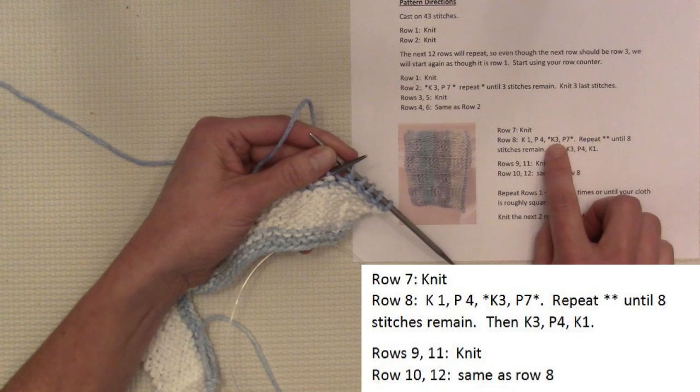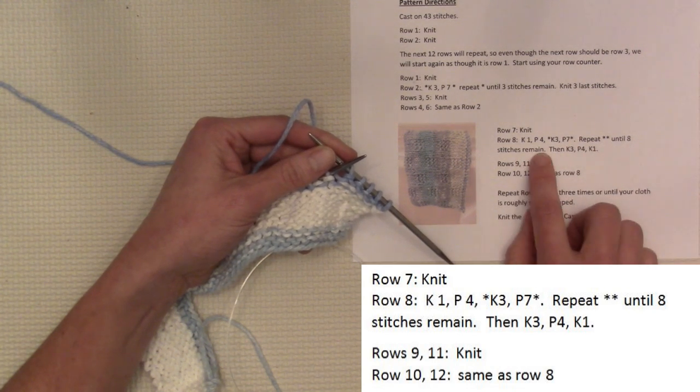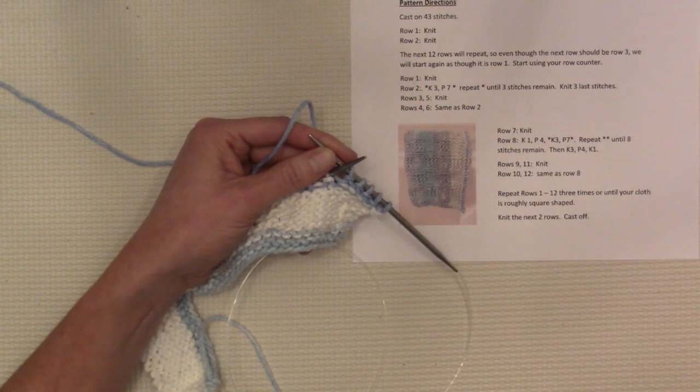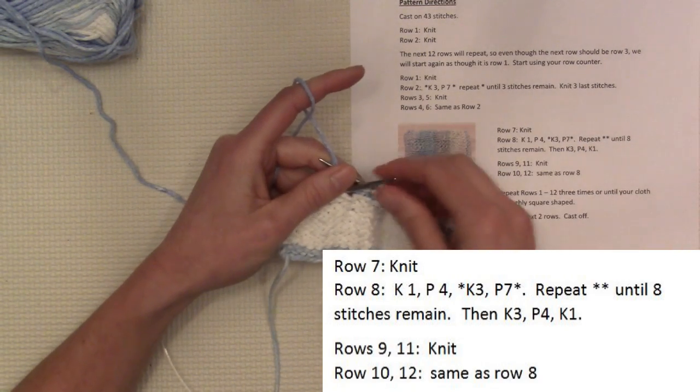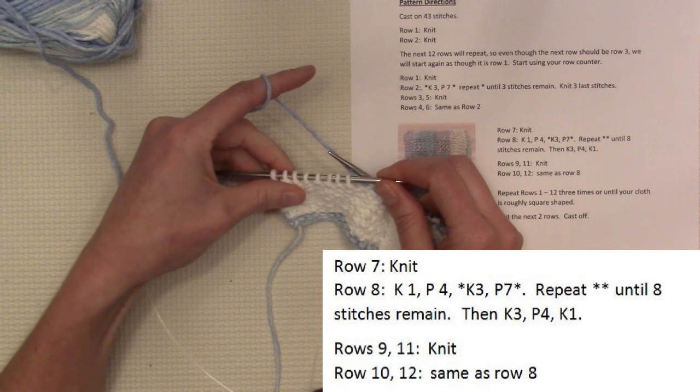Knit 3, purl 7, knit 3, purl 7, knit 3, purl 7, until 8 stitches remain. Alright, I'm just at that point now where I have 8 stitches left on this row 10.